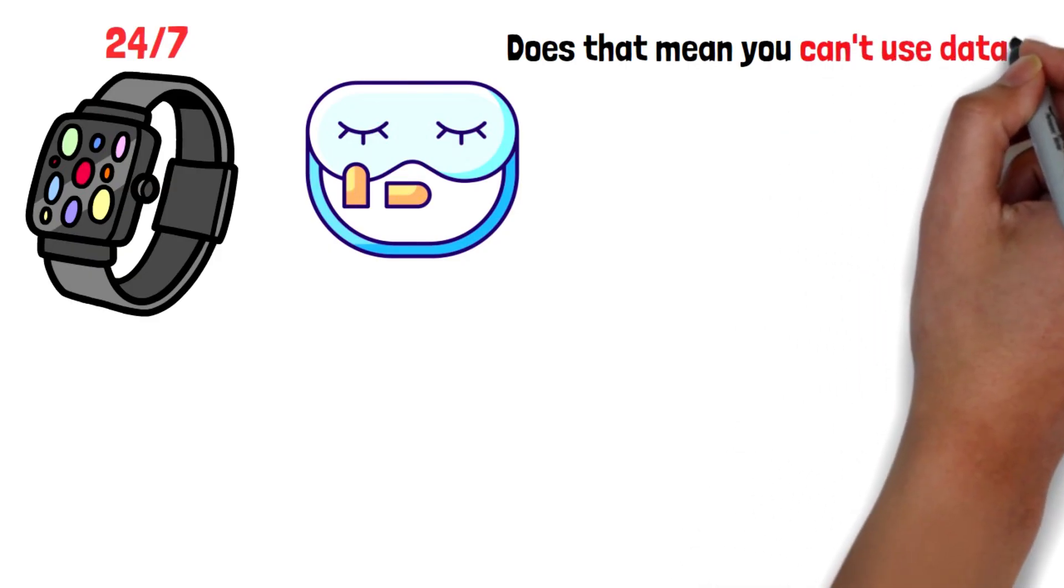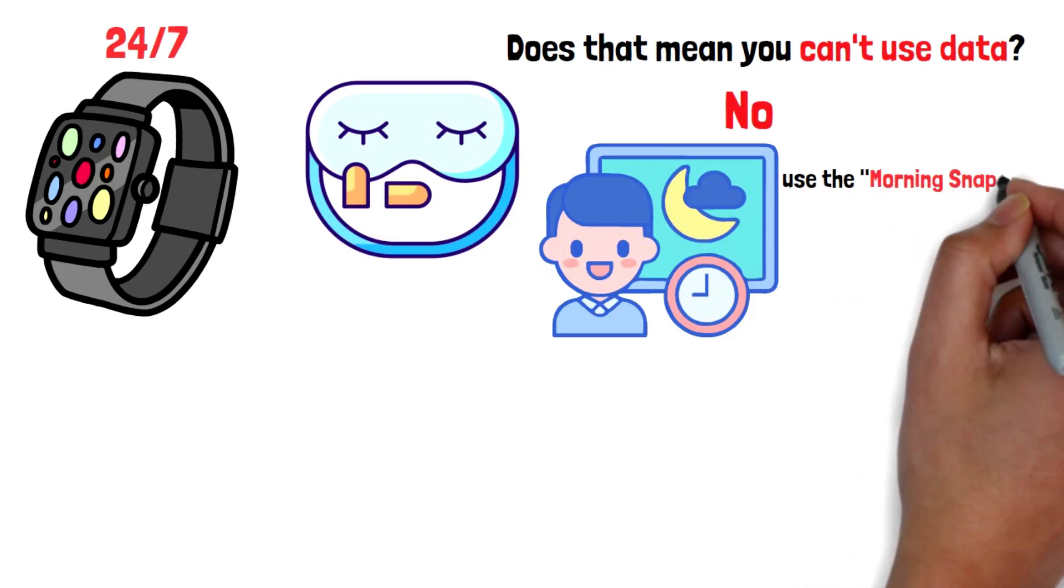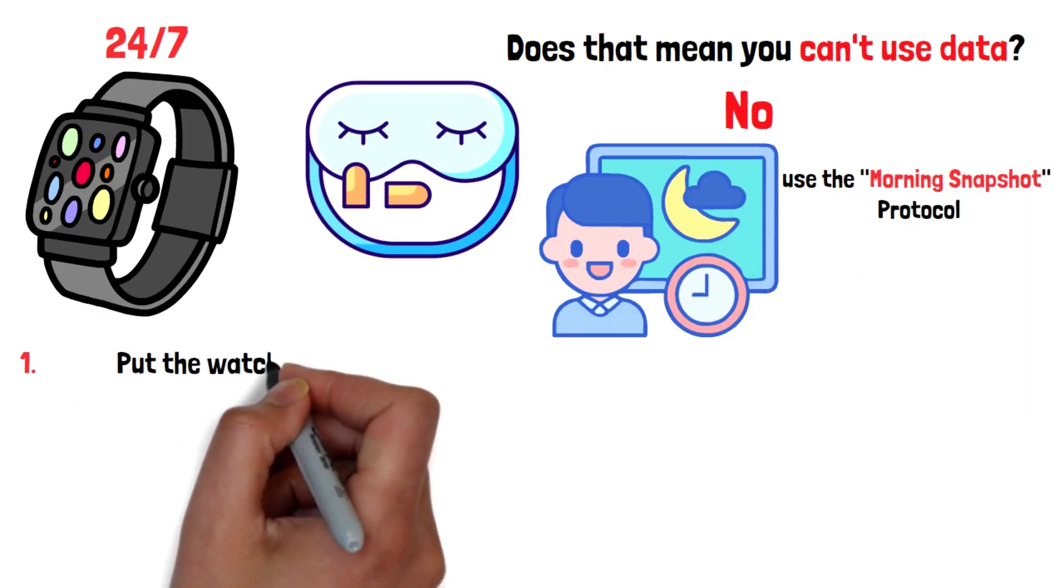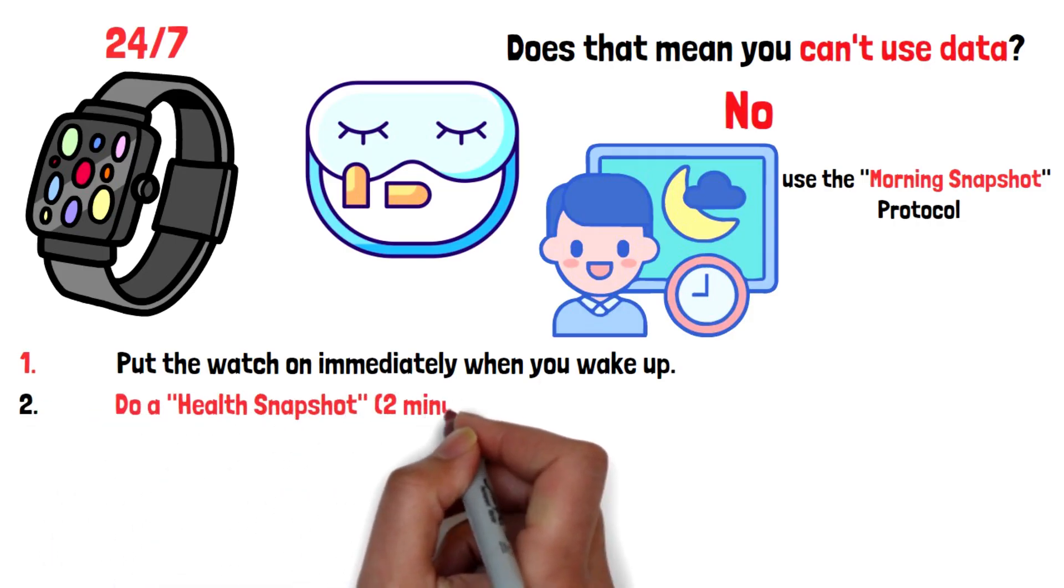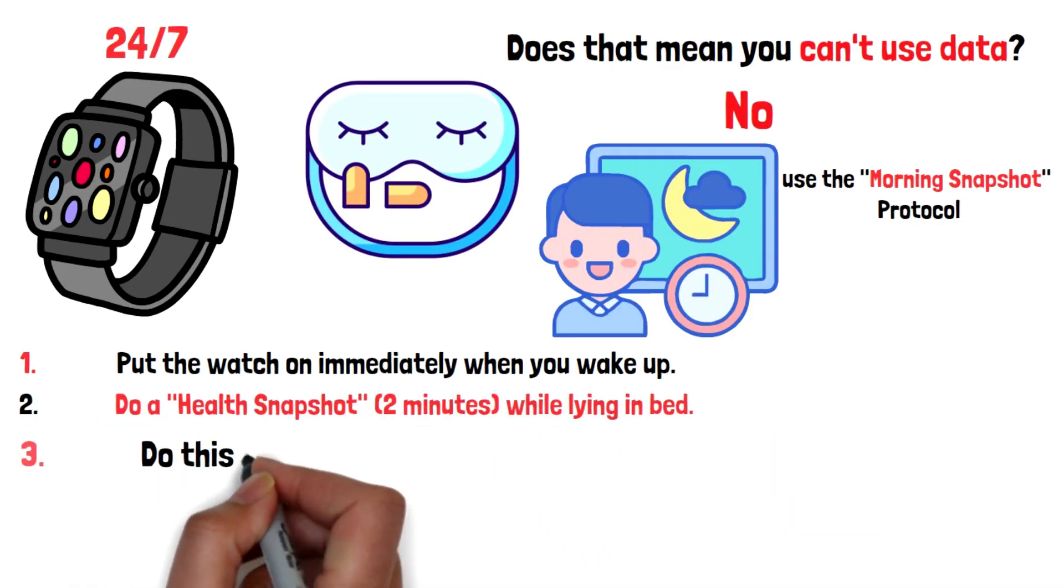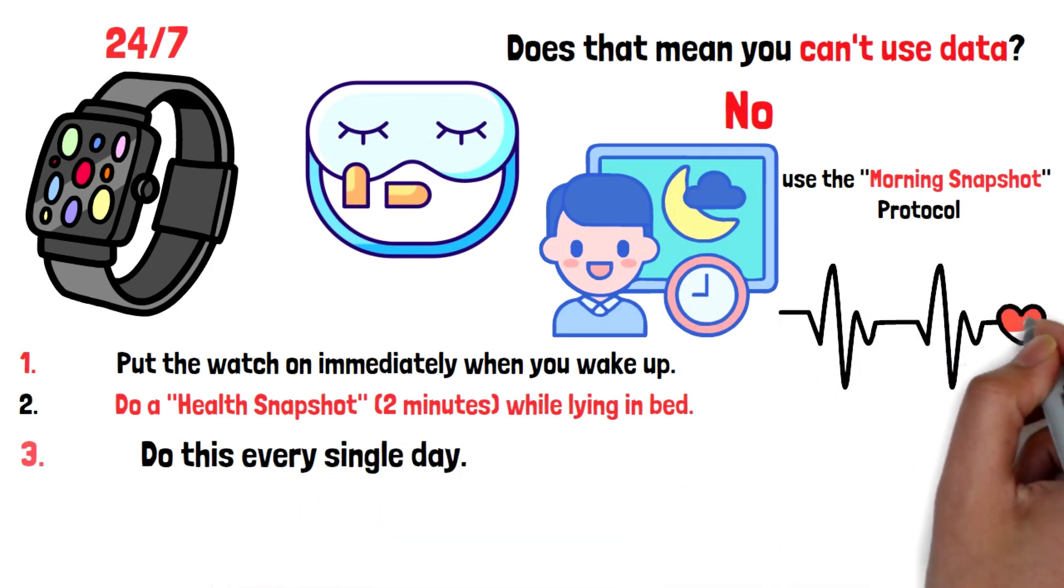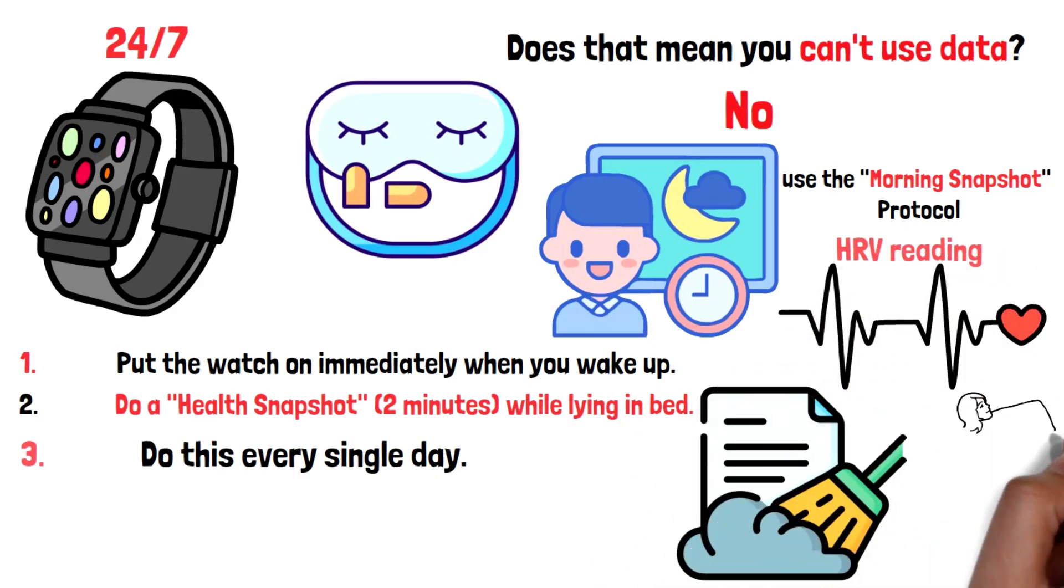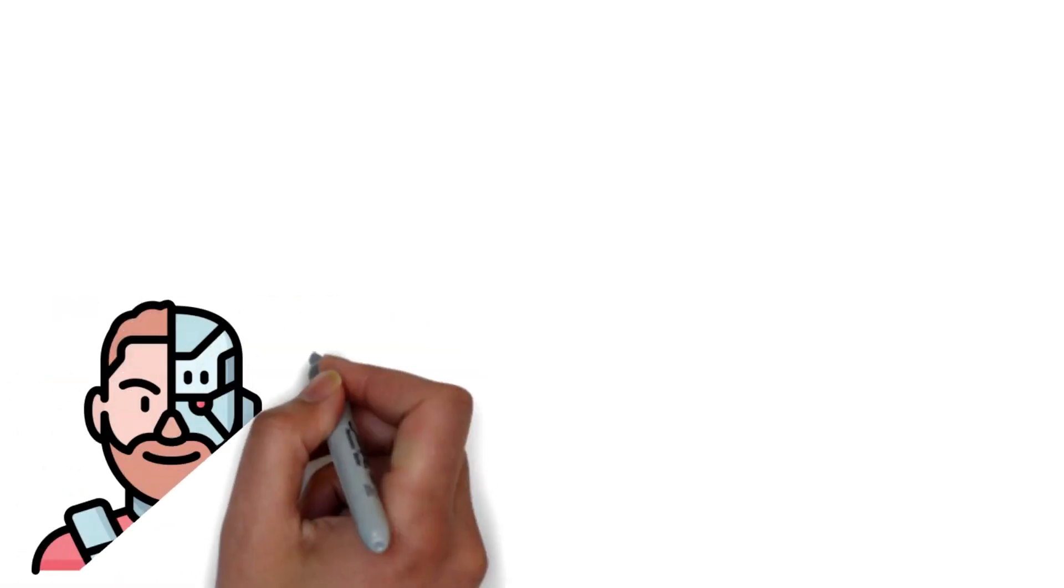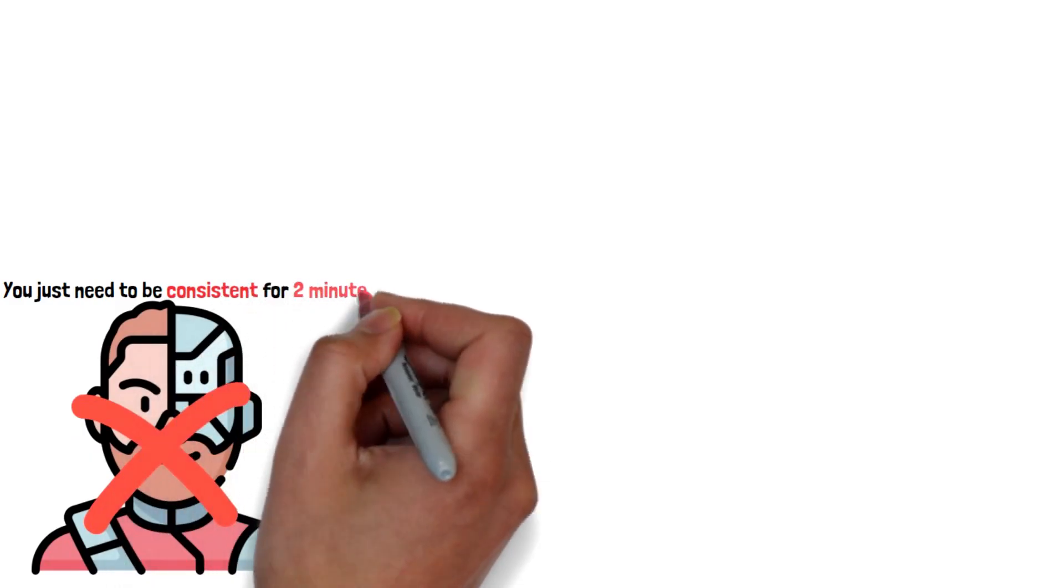Does that mean you can't use data? No. If you hate wearing the watch at night, use the morning snapshot protocol. Put the watch on immediately when you wake up, do a health snapshot for two minutes while lying in bed. Do this every single day. This gives you a manual resting heart rate and HRV reading. It's actually cleaner data because it removes the variables of tossing and turning. You don't need to be a cyborg to have good data—you just need to be consistent for two minutes a day.